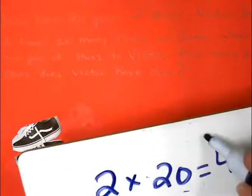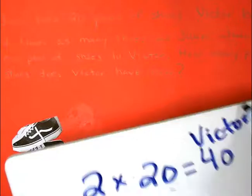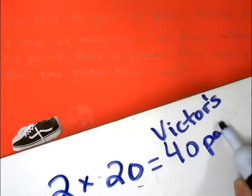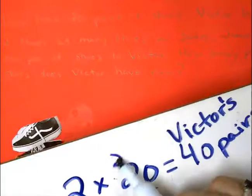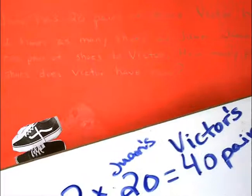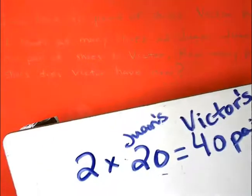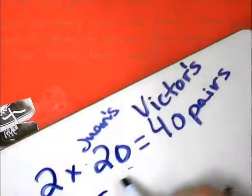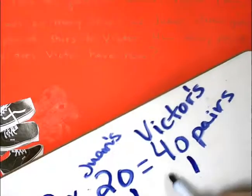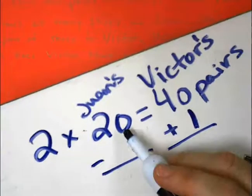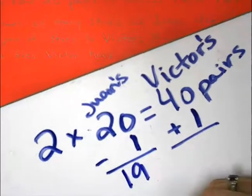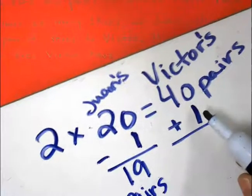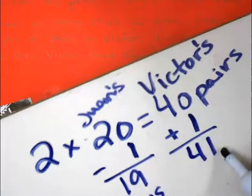So Victor has — these are Victor's shoes — 40 pairs. And the 20, that was Juan's amount of shoes that he has, right? And the question says Juan gives one pair of shoes to Victor. So now Juan is going to be losing one pair of shoes and giving it to Victor, so Victor is going to be gaining one pair. Now Juan will have, instead of 20, he'll have 19 pairs. And Victor, instead of having 40, he'll have 41 pairs of shoes.